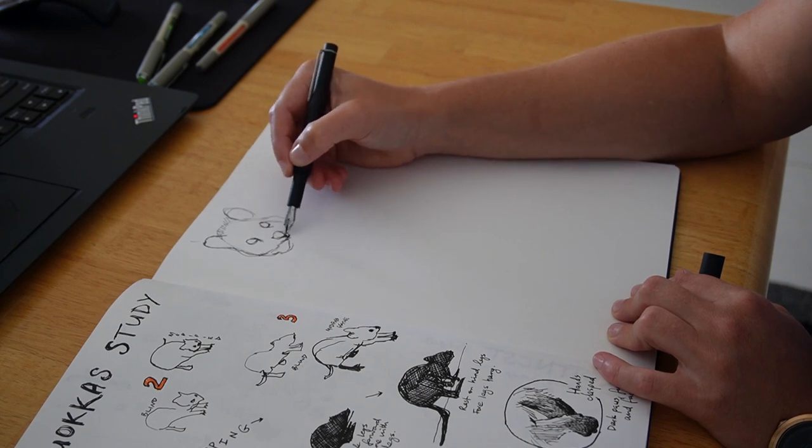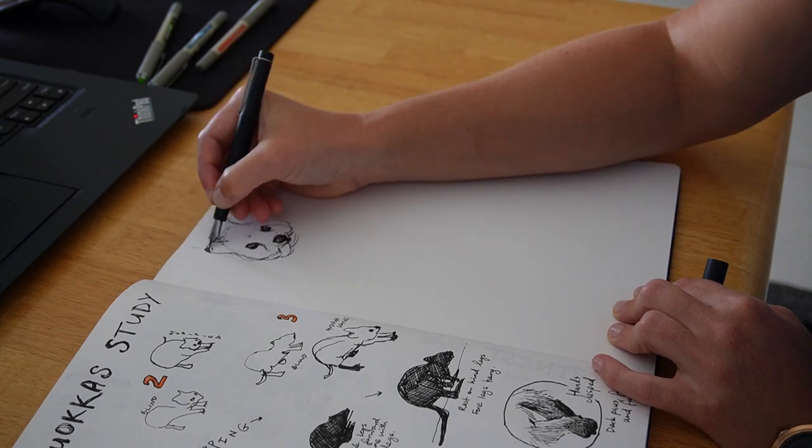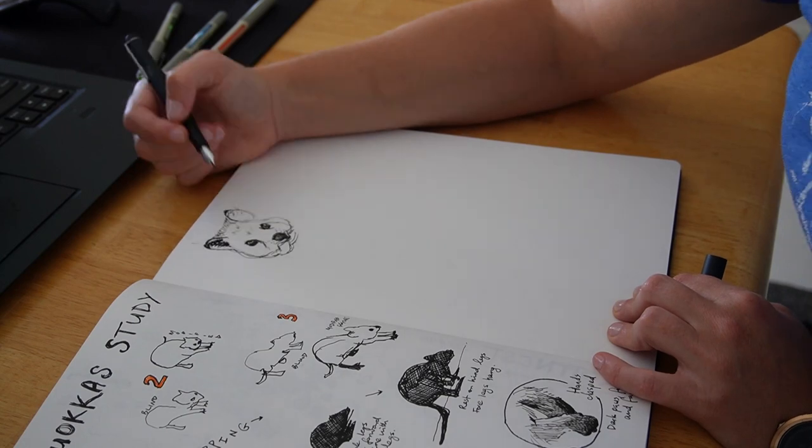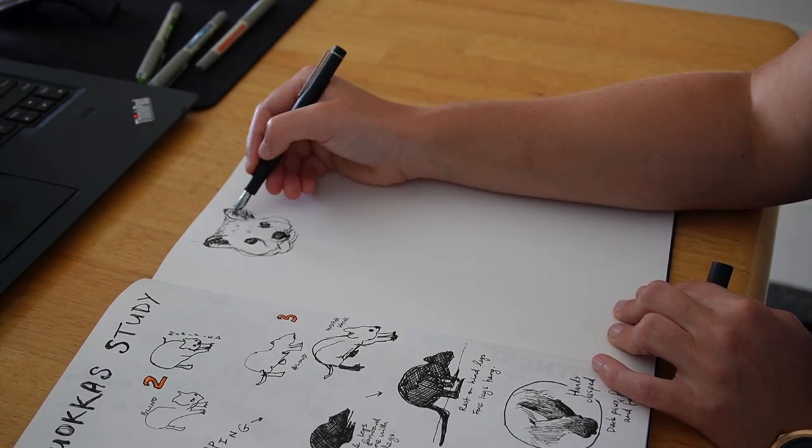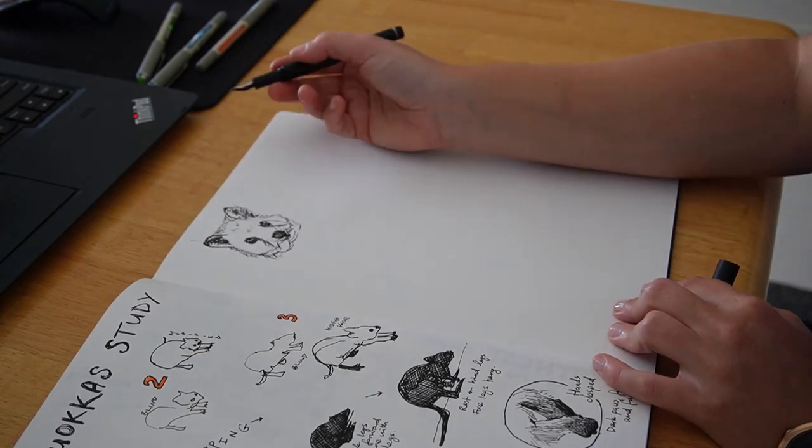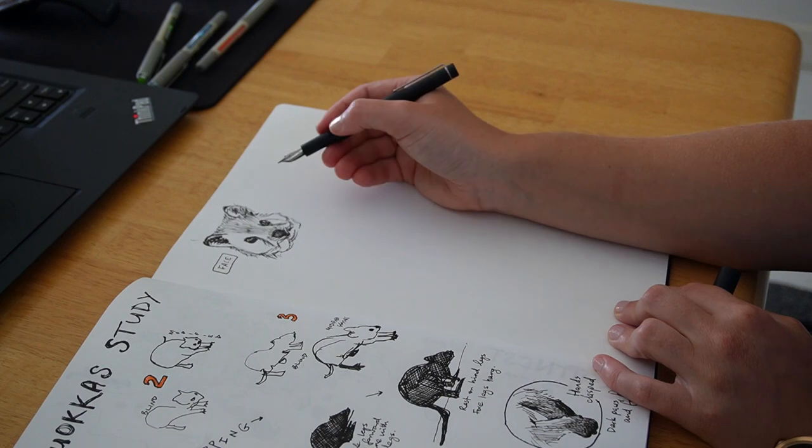I find the chubby face of a quokka hard to capture, so I focus on some close-up headshots, including their world-famous smile. See, they've earned their reputation as Australia's happiest animal and are a major tourist drawcard to the island to join in the quokka selfie trend, just like Roger Federer and Chris Hemsworth do.